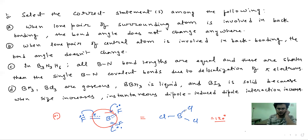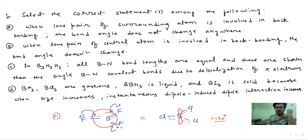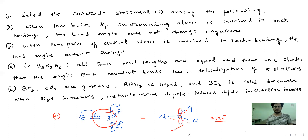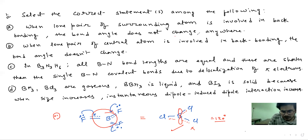You must know this: if a lone pair comes back to the backbonding, this is the case of backbonding. So if you have backbonding, there is no effect on the bond angle — but this always happens anywhere. It always happens.